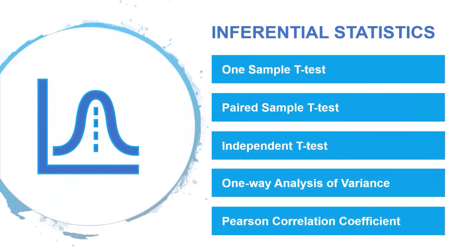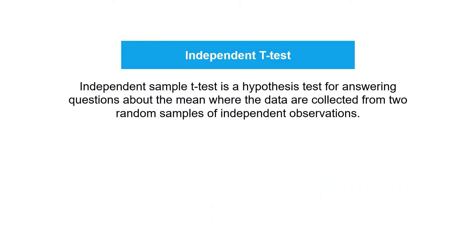The third test is the independent t-test. This test is a hypothesis test for answering questions about the mean where the data are collected from two random samples of independent observations.